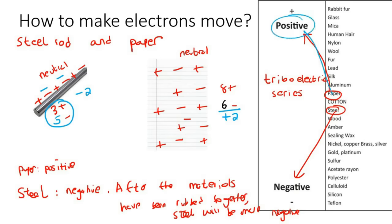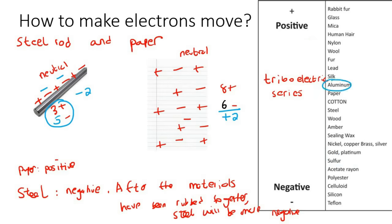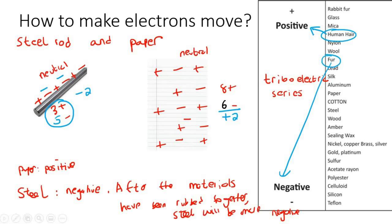So the paper ended up being positive - it's higher up on the table, so it's closer to the positive side, whereas the steel is closer to the negative side. And if you compare any two materials on the table, the one lower down always goes to the negative side, and the one higher up always goes to the positive side.